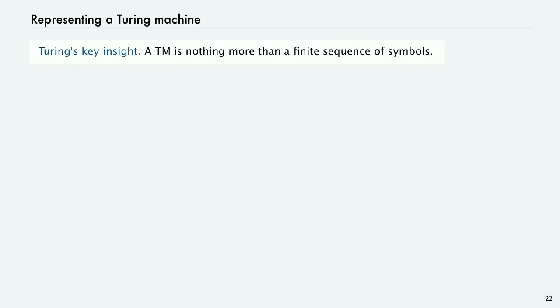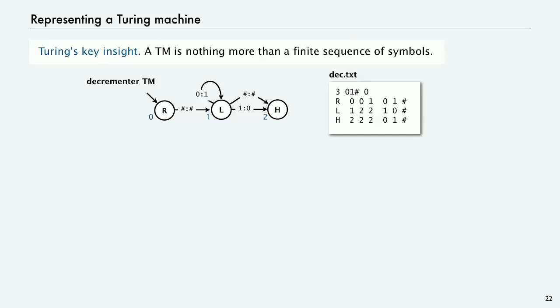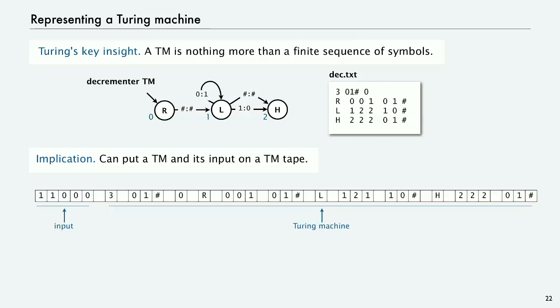A Turing machine is nothing more than a finite sequence of symbols. We have our decrement Turing machine that we drew out graphically, but we had a text file representation of it that's just a bunch of symbols. So in particular, what we can do is we can put a Turing machine and its input on a Turing machine tape.